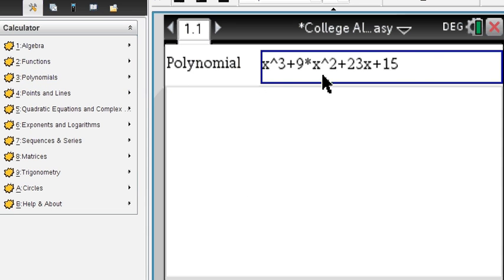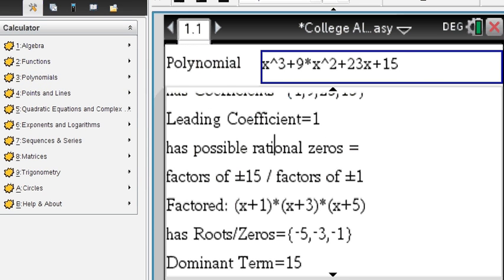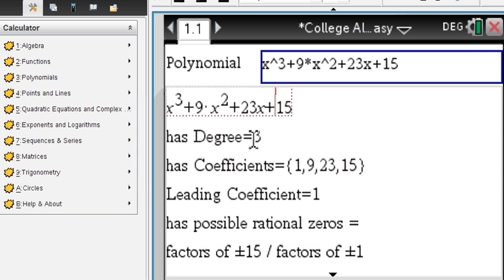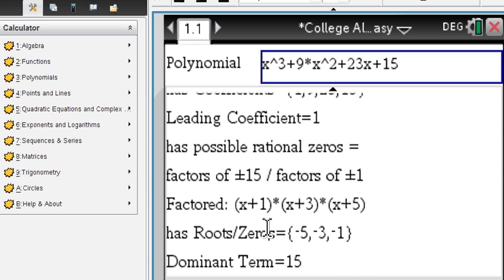Polynomials. You enter a polynomial such as this one. And you will immediately find its degree, the coefficients, leading coefficients, the possible rational zeros, and the dominant term.